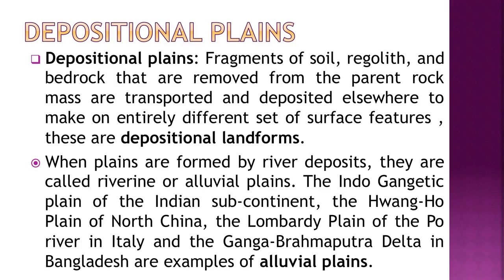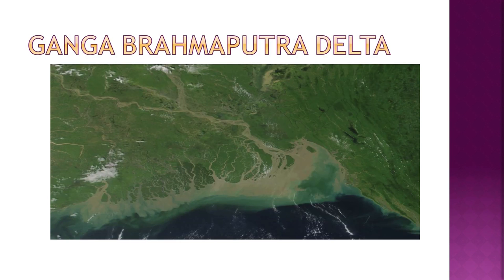Third are depositional plains, formed when fragments of soil, regolith and bedrock removed from the parent rock mass are transported and deposited elsewhere. When plains are formed by river deposits, they are called riverine or alluvial plains. The Indo-Gangetic Plain of the Indian subcontinent, the Huang He plain of north China, the Lombardy plain of the Po River in Italy, and the Ganga-Brahmaputra delta in Bangladesh are examples of alluvial plains.